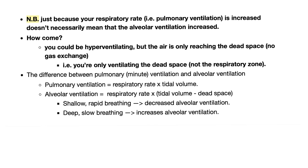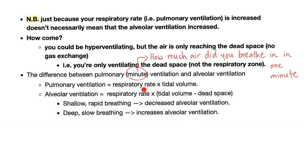There is a big difference between pulmonary ventilation and alveolar ventilation. Pulmonary (minute) ventilation is simply respiratory rate times tidal volume. But alveolar ventilation — which is what actually matters — is respiratory rate multiplied by (tidal volume minus dead space), because dead space is not involved in gas exchange. Shallow, rapid breathing only ventilates dead space. Deep, slow breathing increases alveolar ventilation.